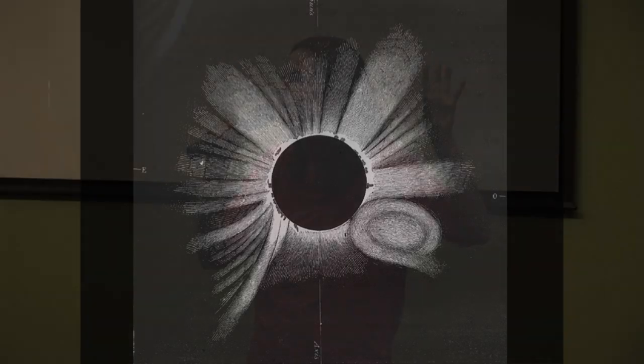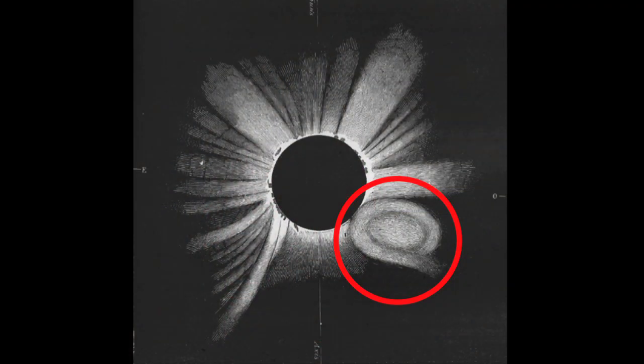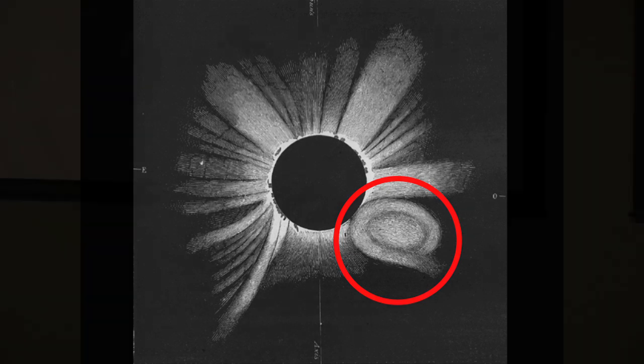We can also look at the Sun during times of a solar eclipse — both an artificial and a natural one. This is a drawing from 1860 of a solar eclipse. When you eclipse the Sun, the bright light from the visible surface is blocked out and you can see very faint extended structures in the atmosphere. The most exciting thing is the object in the red circle — this is a coronal mass ejection caught during the moment of totality.